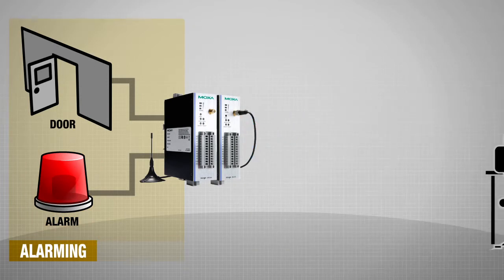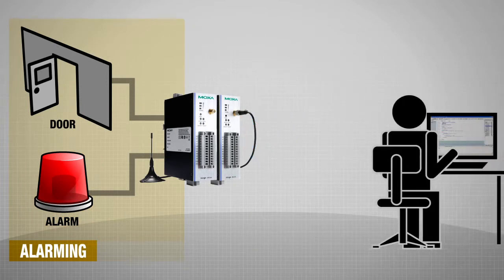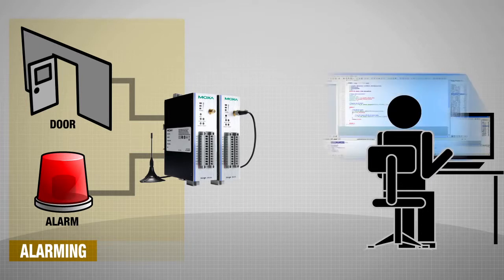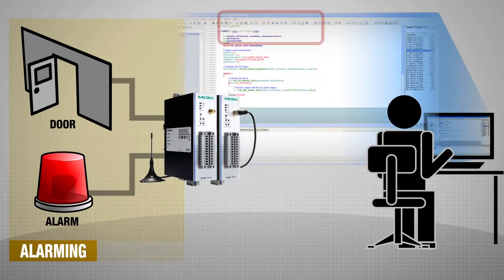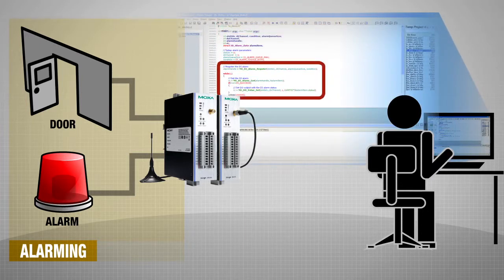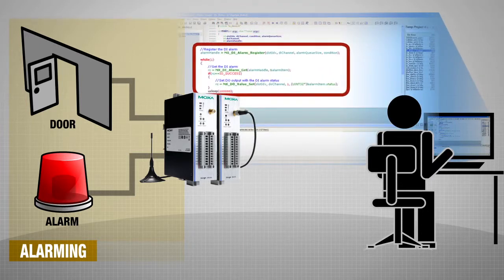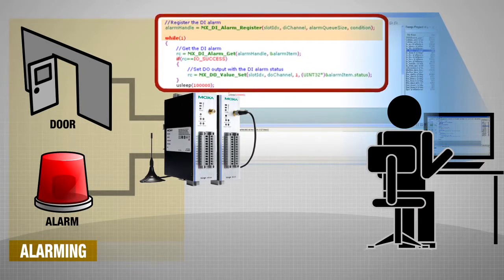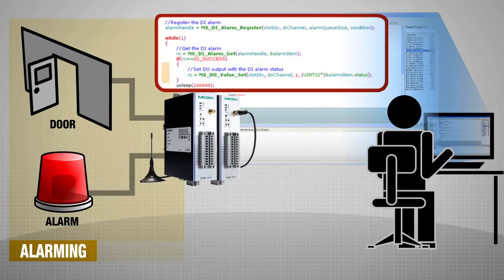First, let us look at how easy IO ALARMING is. When you want to set an alarm to activate when a door opens, all you have to do is: first, register a door opening event; then, get the door's current status; and finally, activate the alarm light when the door opens.